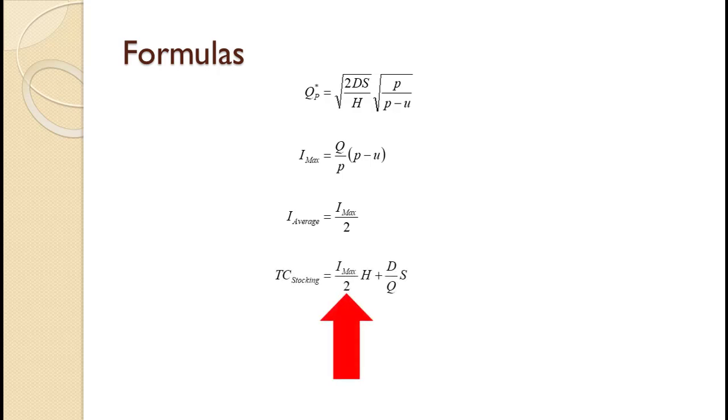Total stocking cost is calculated using the same basic approach, only with the average inventory of I sub max divided by 2, replacing Q divided by 2. Cycle time is Q divided by the usage rate. Runtime is Q divided by the production rate.